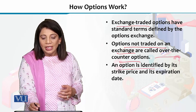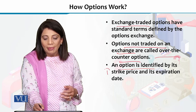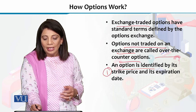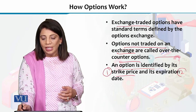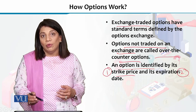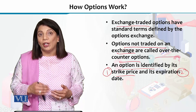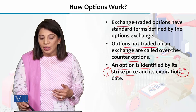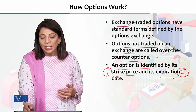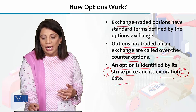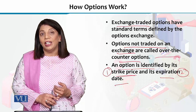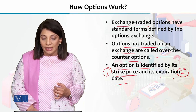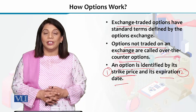Jo option hai, uske liye jaise ke maine aapko bataya, there are two extremely important things which we need to know if we are going for options. One is the expiration date and the second is the strike or the exercise price.